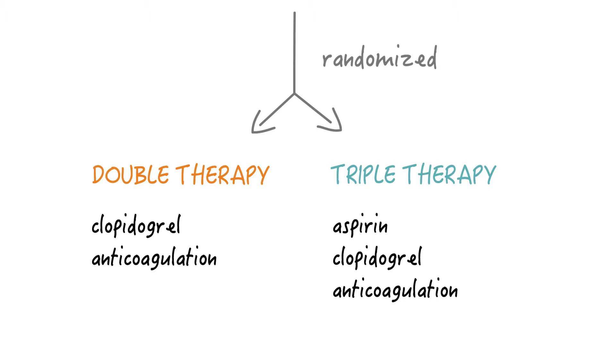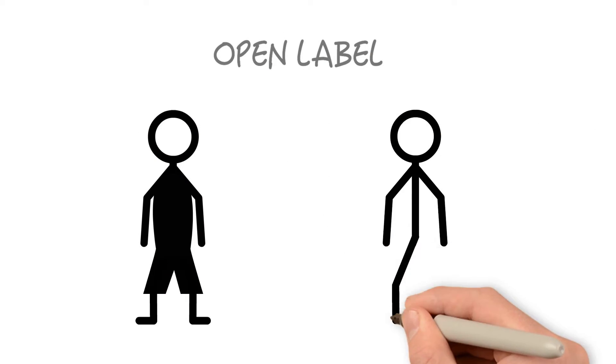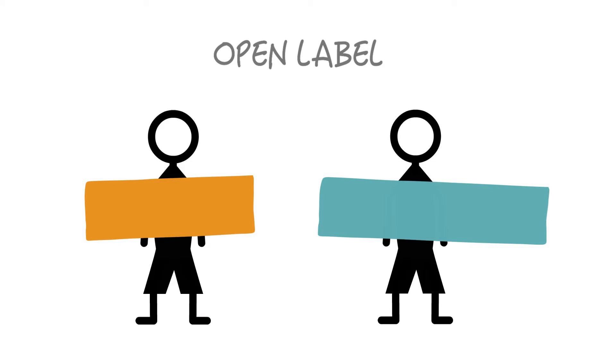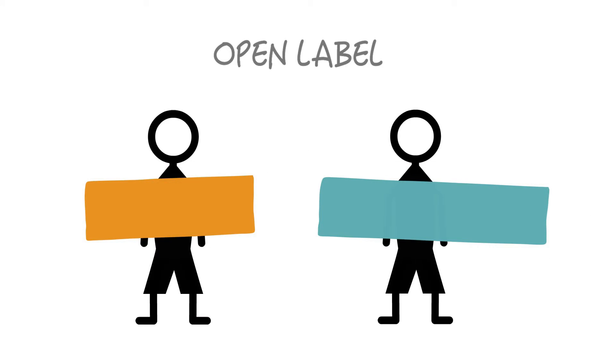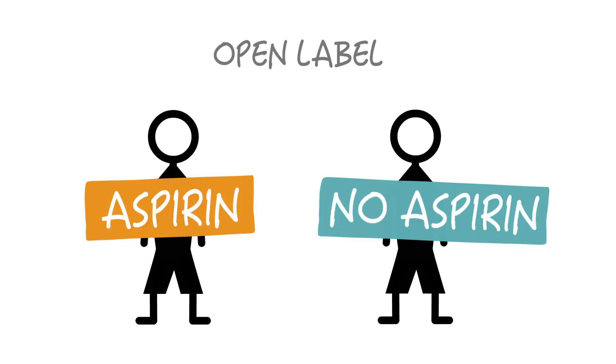Let's go back to the title of the study real quick. The subtitle says an open label randomized controlled trial. Now you probably know what randomized control means, but what about open label? What does that mean? Well, that basically means that the dual therapy group did not get a placebo tablet instead of aspirin. So everyone involved, including the treating physician and the patient, knew which group they were in. That's all it means.